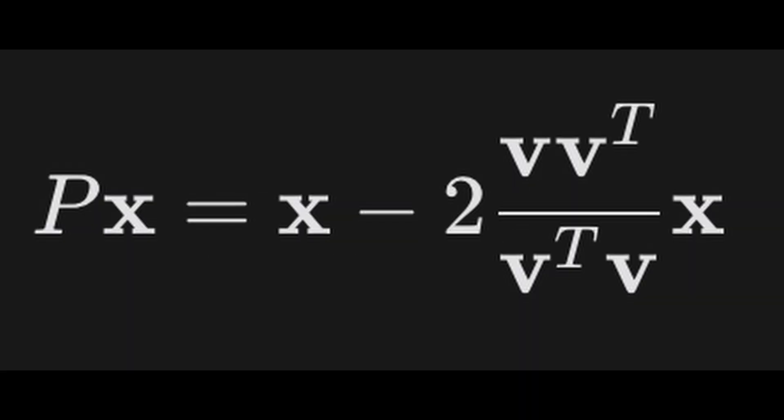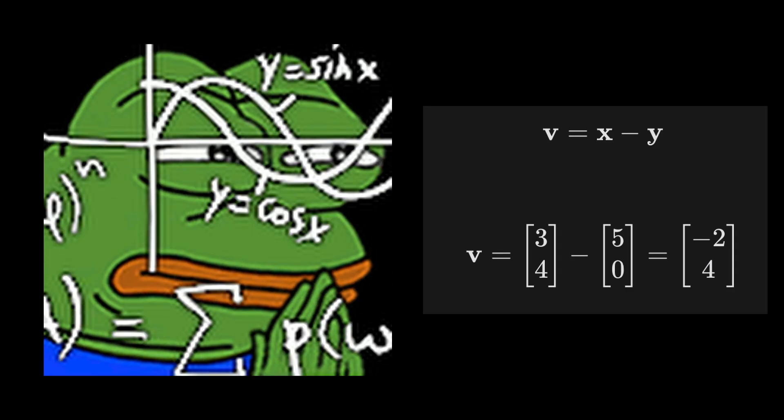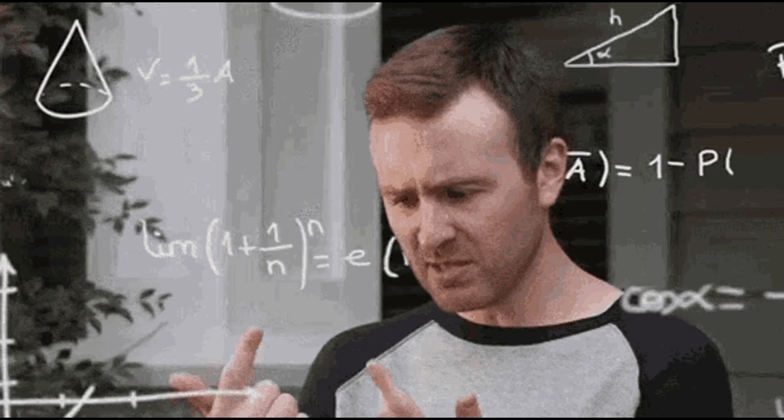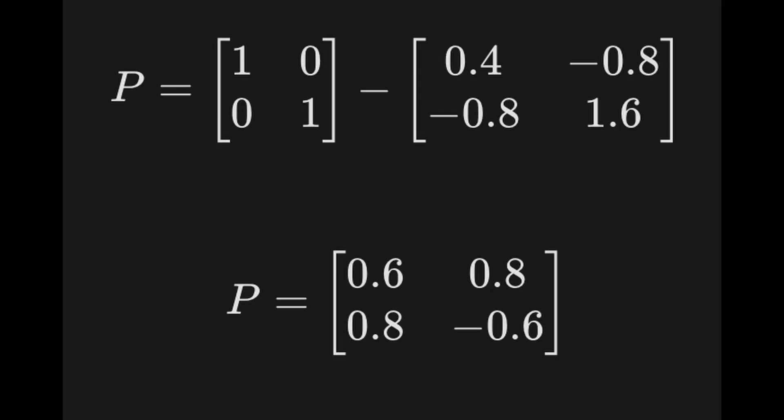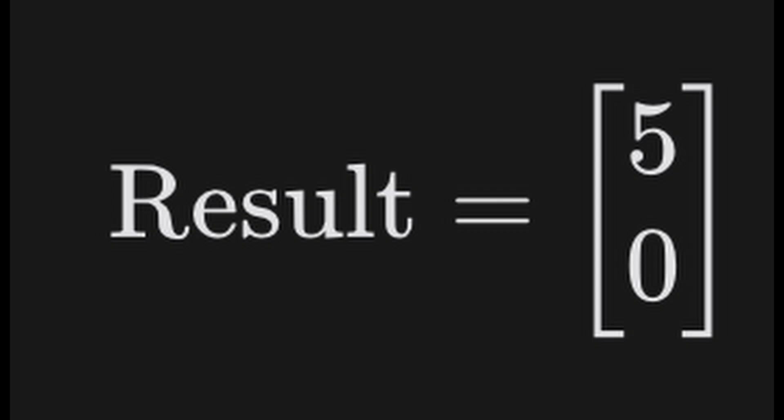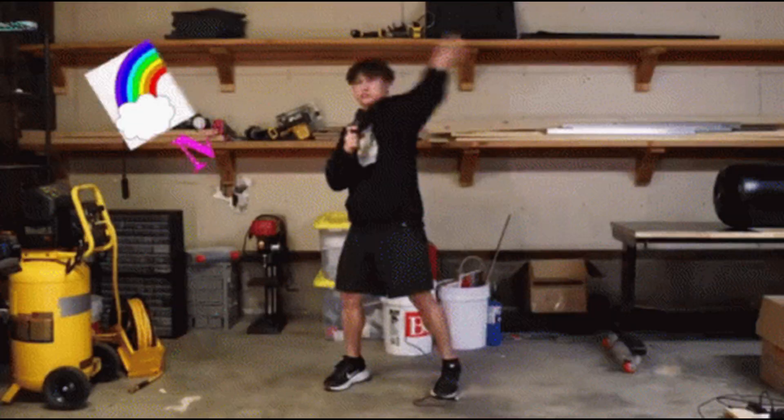To follow the formula, we will just subtract original vector minus our target. That's gonna be our v. And if we plug v into the formula, we get a bunch of math here, and at the end we get Householder matrix. Once we multiply Householder matrix times our vector, we get our resulting vector.